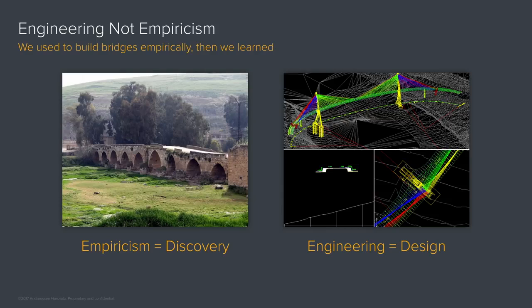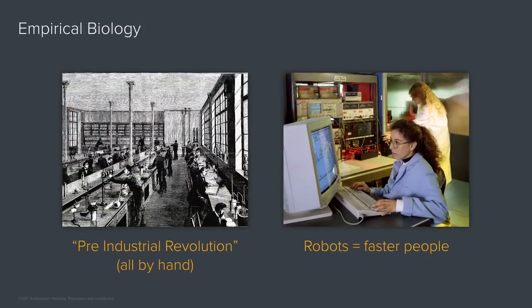We want to work on things in the engineering area — something where you don't make 10,000 and cross your fingers; you make one, two, or three, and that works. To give you a sense of scale, I'll give you a brief tour starting small and going all the way big: cells, then engineering human behavior, engineering organisms, engineering healthcare systems, and finally engineering the very premise of healthcare.